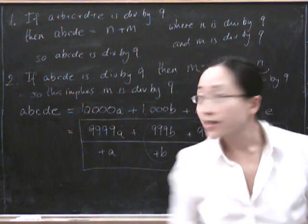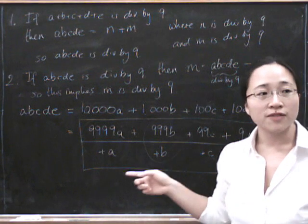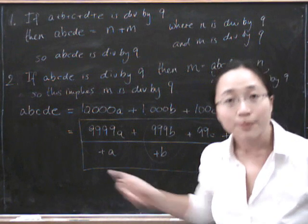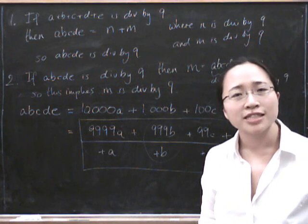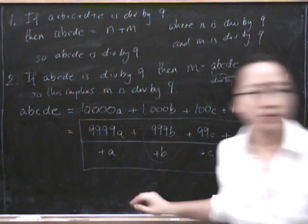So what you can do now is see if you can do this argument for divisibility by 3, and also see what happens if you try and do divisibility by 11. Thank you.